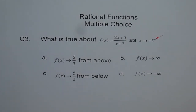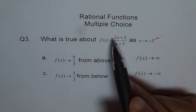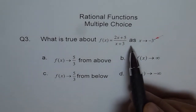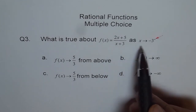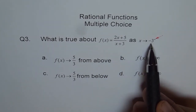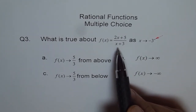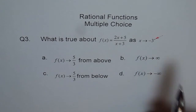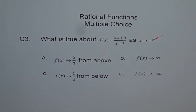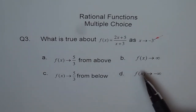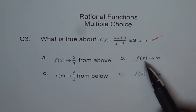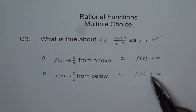Let us look into the equation. At x plus 3, if I put minus 3 here, the denominator becomes 0. So we are expecting a vertical asymptote. That means we have a discontinuity which is leading us to infinity. Now we have to see which one of these answers is right.